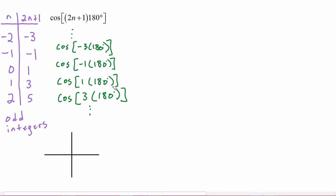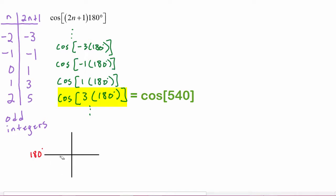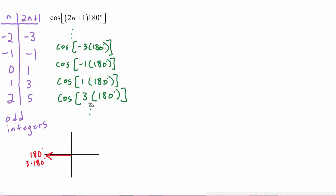We know 180 degrees lives right here on the negative x-axis. If we do 3 times 180 degrees, that's 540 degrees, which also lives on the negative x-axis — all the way around is 360, add 90 to get 450, add another 90 to get 540. Another way to think of it: 180 degrees three times lands here again. The same is true for 5 times 180 — it also lands on the negative x-axis.